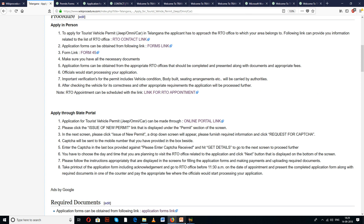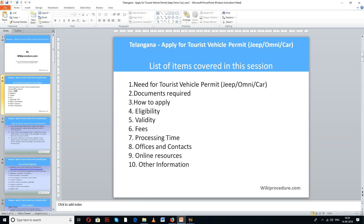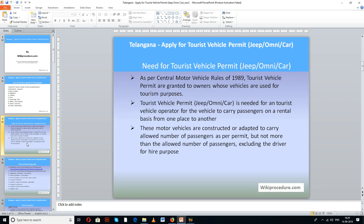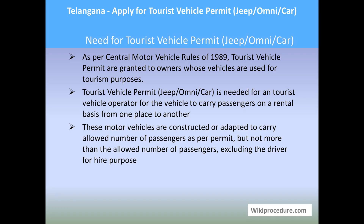You will understand the importance of these links in the due course of our presentation. The list of items covered in this session includes: need for tourist vehicle permit, documents required, how to apply, eligibility, validity, fees, crossing time, offices and contacts, online resources, and other information. This procedure is sponsored by wikiprocedure.com for you.